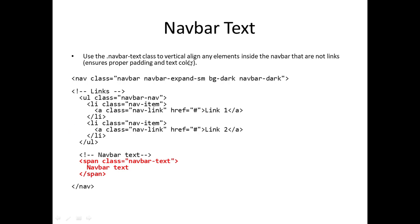Navbar text — we can also place text that is not a link inside the navbar. To do this, we use the navbar-text class to vertically align any elements inside the navbar that are not links. Inside the navbar we use span class equals navbar-text. Navbar-text is not a link; it's just regular text inside the navigation bar.